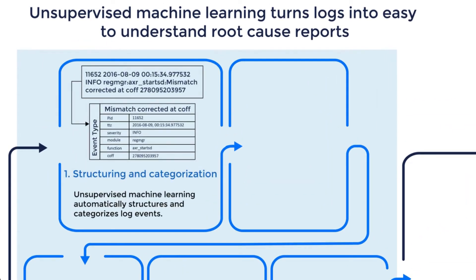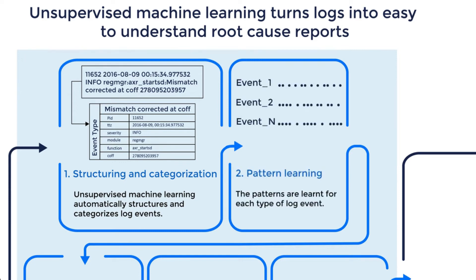The first layer of the machine learning is the most important. It uses unsupervised machine learning to structure and categorize the log events. It does very well even for new or very rare log events, and this turns out to be important because identifying new and rare events is extremely useful when trying to find the root cause of a problem. Once all the events have been categorized, the next layer of ML learns the patterns for each type of log event. This continues to improve as it sees more data, but even a small number of log lines is enough for it to get a good baseline.